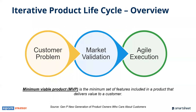This is where the iterative product lifecycle approach becomes more appropriate. It's guided by three main phases. The first is to identify a customer problem — we need to understand the pains and problems customers have so we can find solutions. Once we have a solution, the next phase is market validation, tested with a minimum viable product to confirm market fit. The MVP is a key concept because it represents the minimum set of features needed to deliver value to customers.